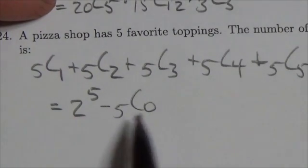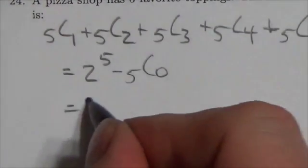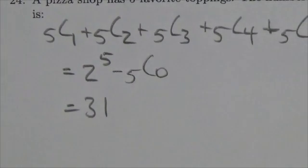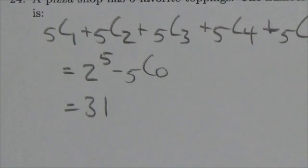Now five choose zero is just one, two to the fifth is 32. So basically, this is 31. There are 31 ways I can go in there and order a pizza with one or more toppings.